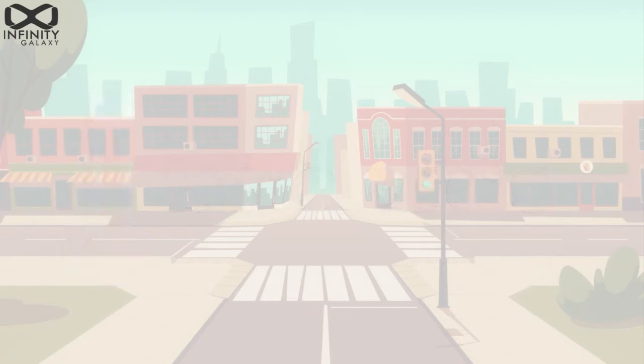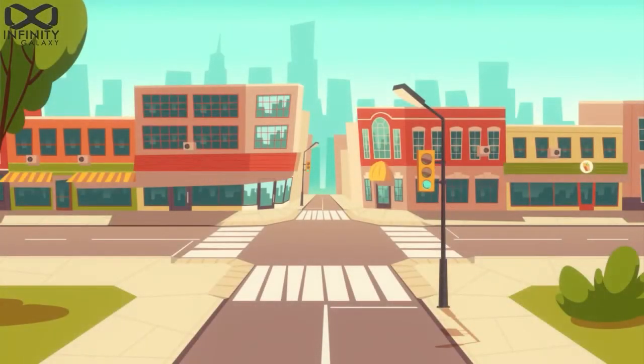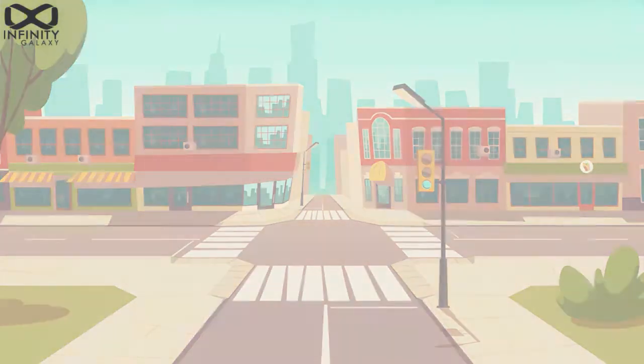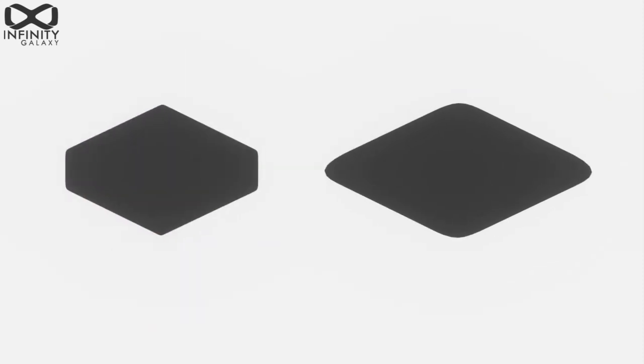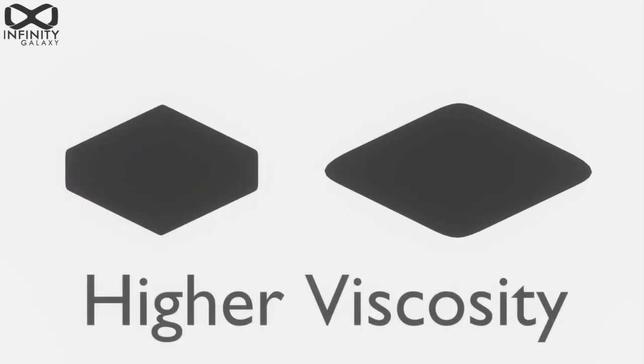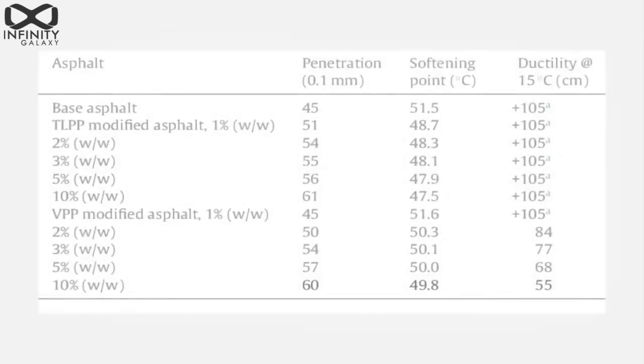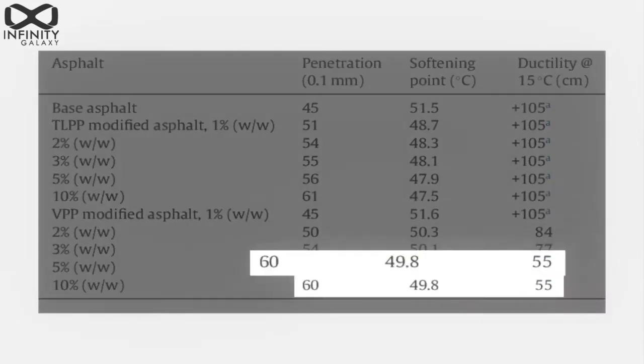Softening point is the temperature the bitumen begins to soften at. The softer the bitumen, the higher its viscosity. Different penetration grades have different softening points. For example, the softening point of bitumen grade 60/70 is between 49 to 56 degrees Celsius.